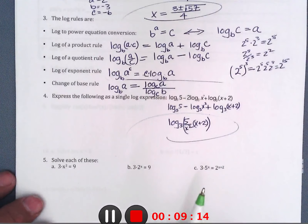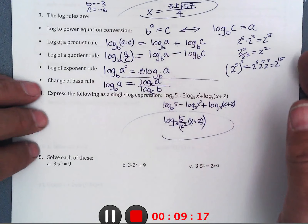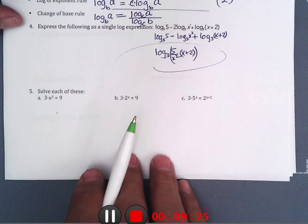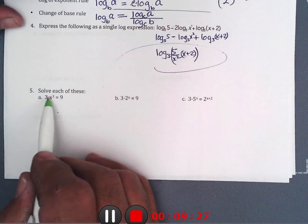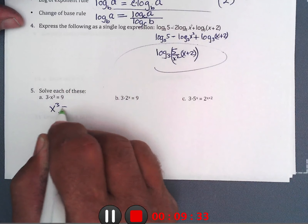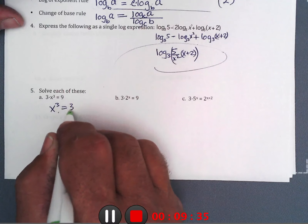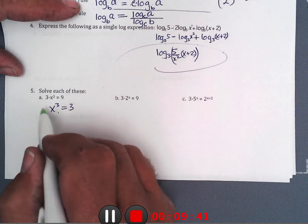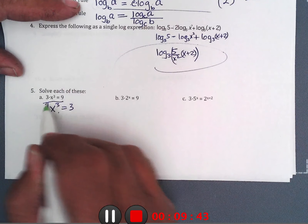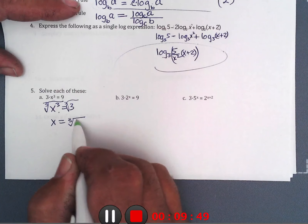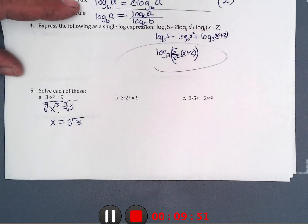Now solving the bottom equations. The first one is 3 times something, so divide both sides by 3 — wait, by 2 — giving x cubed equals 3. To undo a power of 3, take the cube root. So x equals the cube root of 3. Pretty simple, no logs needed.